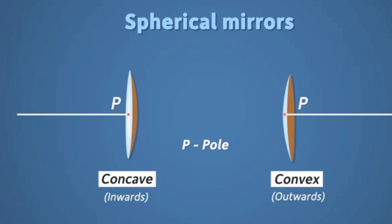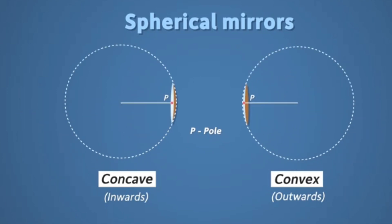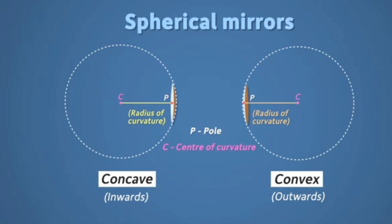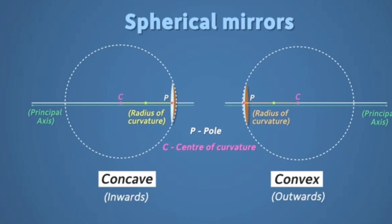Now we'll discuss some terms. The center of the reflecting surface is called the pole, denoted by P. Since the mirror is from a sphere, the center of that sphere is known as the center of curvature. The radius of that sphere is known as the radius of curvature. If you draw a line connecting P and C, this is known as the principal axis, which is perpendicular to the reflecting surface.